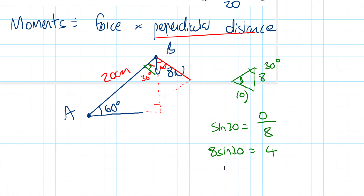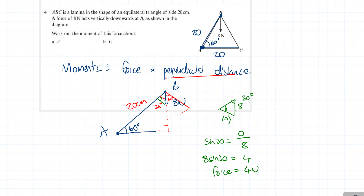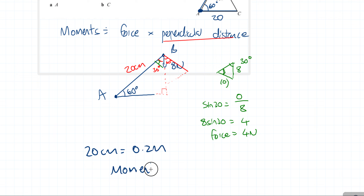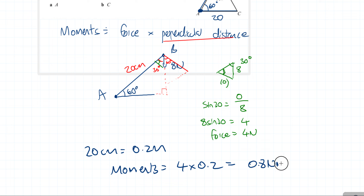The force that is perpendicular to our length is 4 Newtons. We substitute that into our moments equation. Converting 20 centimetres to 0.2 metres, our moment equals 4 times 0.2, which equals 0.8 Newton metres. That's the answer for part A.